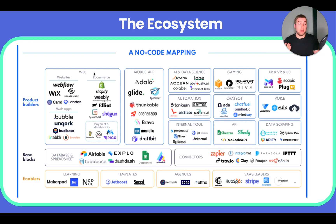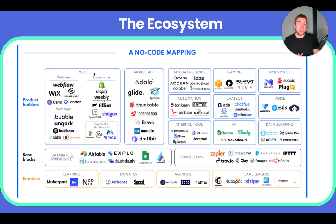Similarly, if you wanted to build an e-commerce website you've got Shopify, Weebly, Gumroad. If you wanted to build a mobile app, there are five or six different options right there. The reason there are so many different tools is because every NoCode tool is fundamentally different — there is no one way to create software. Some tools are going to be easier, some more flexible, and some make it easier to design an interface while others make it easier to build a fast, high-performing app.